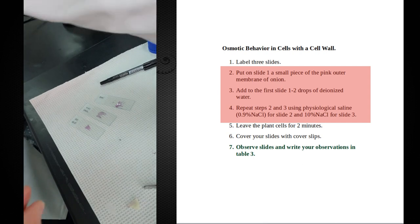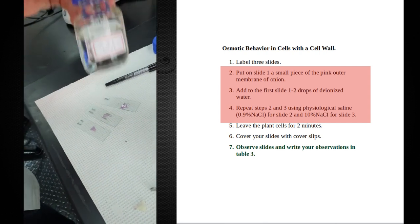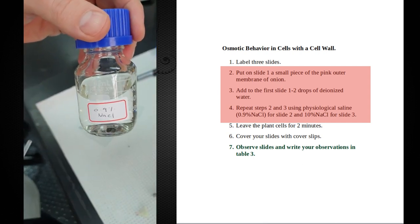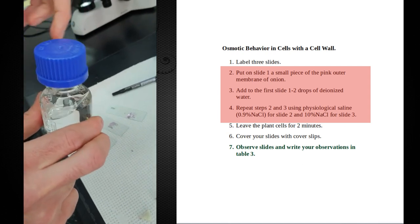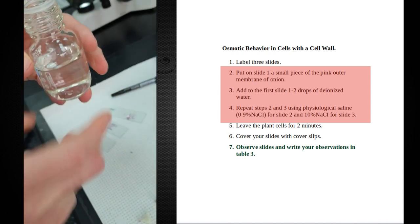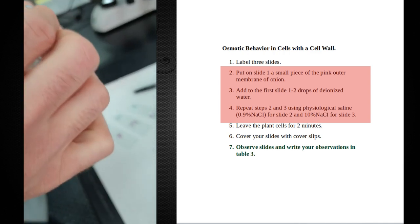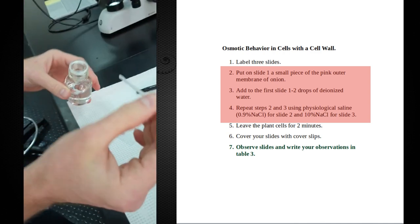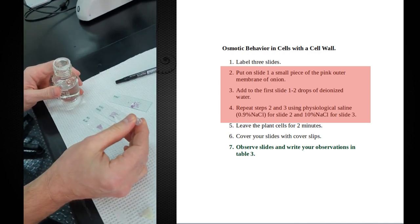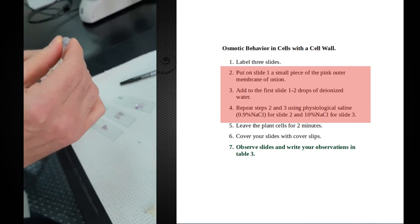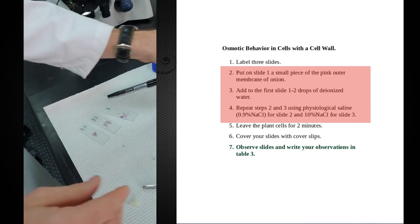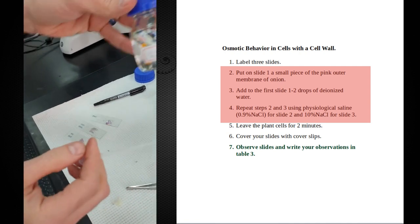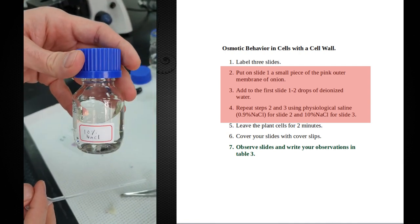And we're going to have 0.9% NaCl. The solution would be isotonic to your red blood cells, for example. So I'm going to put a drop onto my second slide here.